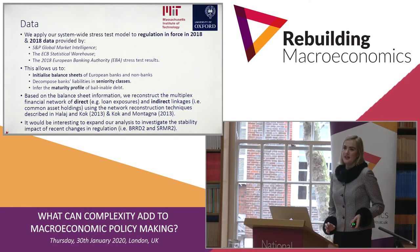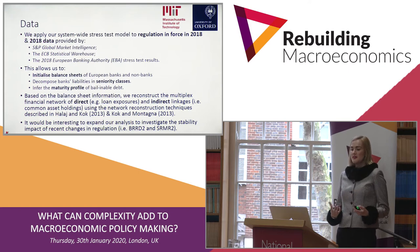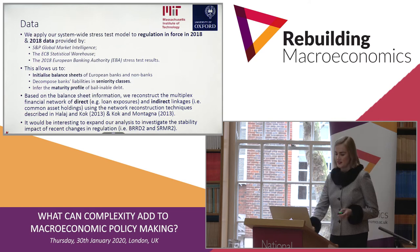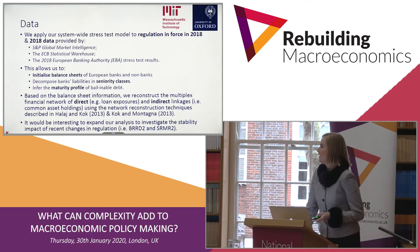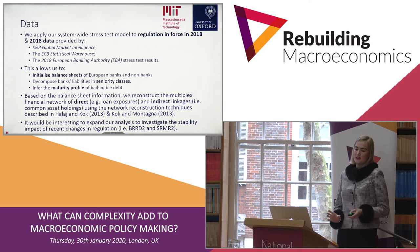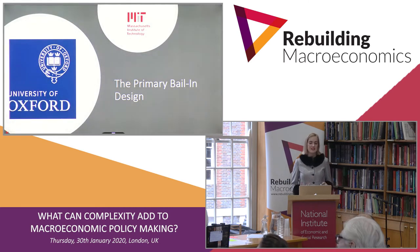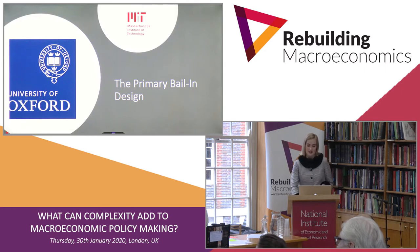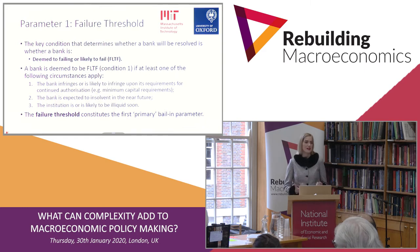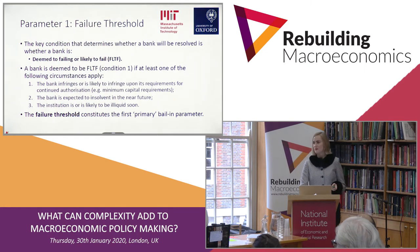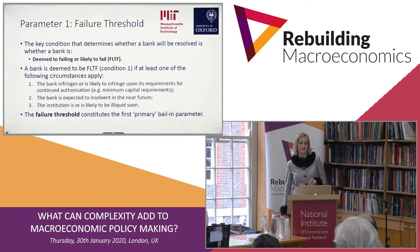I'll now explain the basic idea of the bail-in design and the way we model it, focusing first on the primary bail-in design and then the secondary bail-in design. The first parameter is when do you let a bank fail. The key condition is whether a bank is deemed failing or likely to fail — for example, if the bank is nearly insolvent or nearly illiquid. We model this as the risk-weighted capital ratio of a bank falling below a threshold or the bank becoming insolvent.